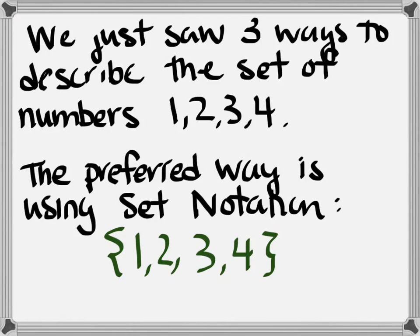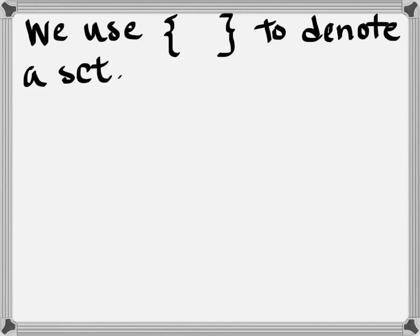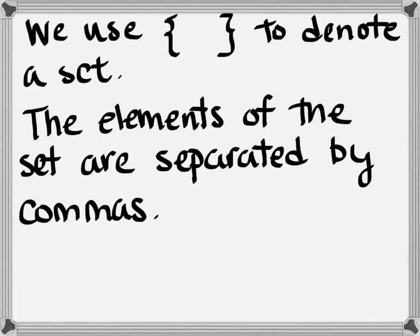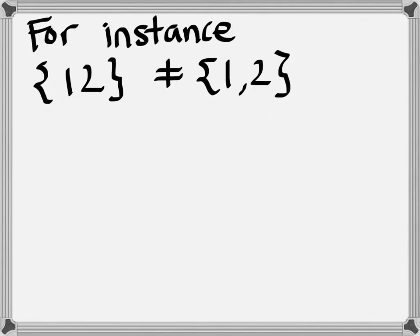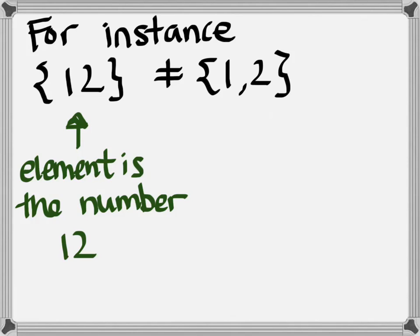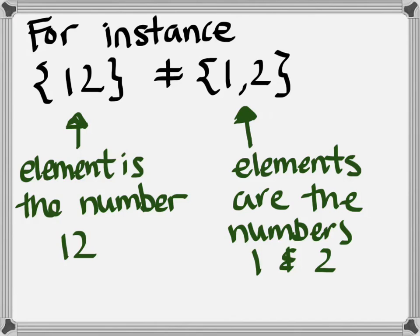Set notation uses the following: it uses brackets and commas. We use the brackets to denote the set. So if an element is in the set or an object is in the set, it needs to be inside of those curly brackets. And then we use commas to separate the elements. For instance, if I were to take these two sets here, I have on the left the set consisting of 12, and on the right I have the set consisting of 1 and 2. Now it's not too hard to understand that the element in the set on the left is the number 12, while the elements on the right are the numbers 1 and 2. Now the only reason why I know that these are different is the set on the left has one element and the set on the right has two elements, but I have a comma separating the numbers 1 and 2 on the right.